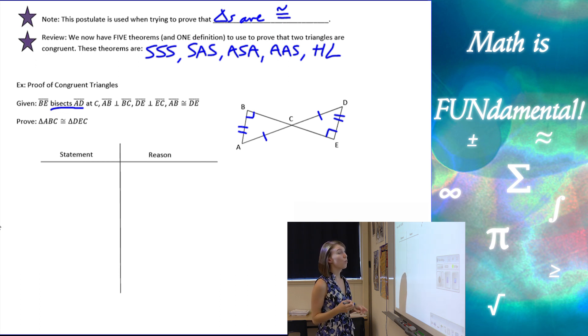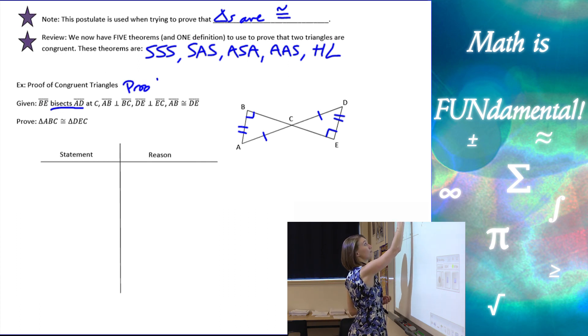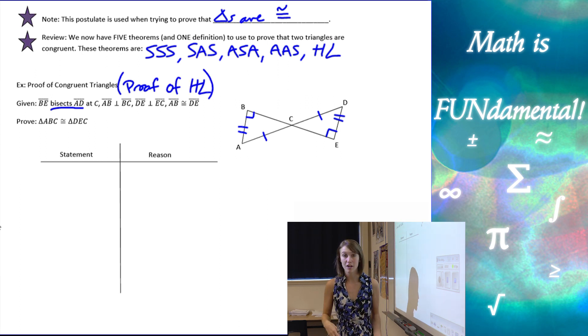Prove that the two triangles are congruent. So what we're actually doing here, if we look at our information, we're actually proving that the hypotenuse-leg theorem works. I mean, if we use the hypotenuse-leg theorem, there's no work to do. So this is going to be a proof of HL.